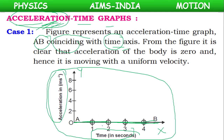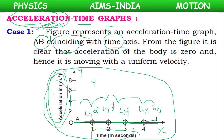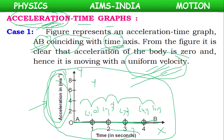When the acceleration is zero, there is no acceleration in the body, which means there is no change in velocity, or the velocity is uniform. So whenever the acceleration-time graph coincides with the time axis, we can directly say the acceleration of the body is zero, or the body is moving with uniform velocity.